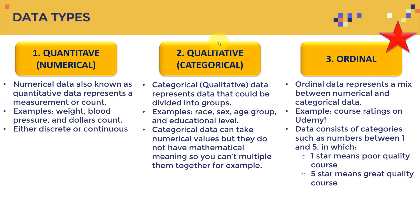The second data type is what we call qualitative or categorical. Categorical data represents data that could be divided into groups — for example, race, sex, age group, or education level. Someone might have a bachelor's degree, no degree, or a master's degree — these are different categories.